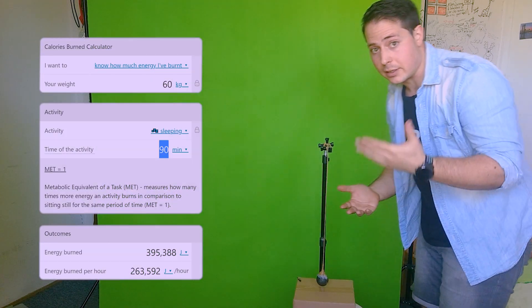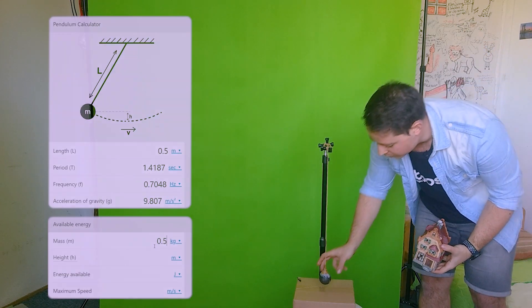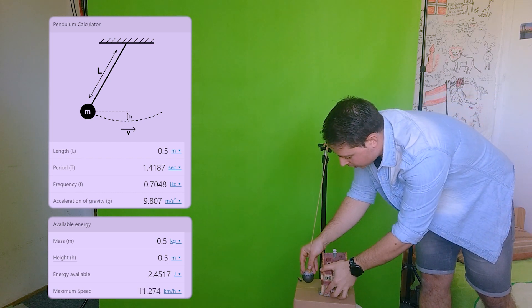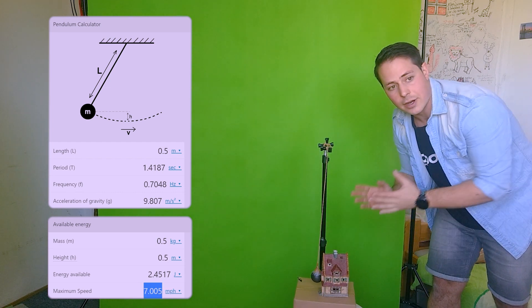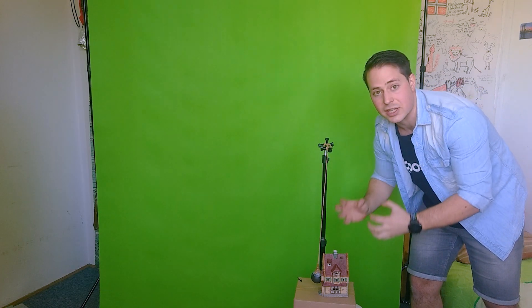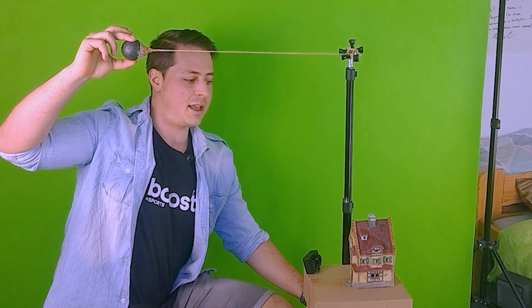This might not seem like much, and it is not, because you probably burn more calories while sleeping in less than a minute. But given that this ball is going to be moving very fast, about 11 kilometers per hour at the bottom, the time of collision is going to be very short. And therefore, I'm pretty confident we're going to be able to smash this house into pieces and just completely wreck it. So, are you ready to smash? Let's go! Let's put it at maximum height and go!